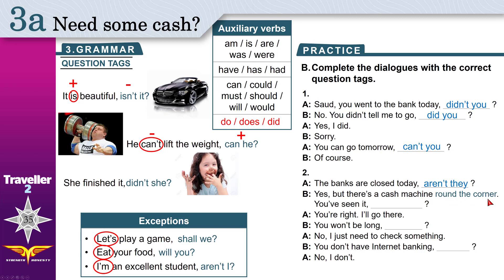'There is a cash machine round the corner' — 'round the corner' means not far away. 'You've seen it' — 'you have seen it' is present perfect; 'have' is the auxiliary verb, affirmative, so tag is negative: 'haven't you?' 'You won't be long' — 'won't' means 'will not', negative, so make tag affirmative: 'will you?' 'You don't have internet banking' — 'don't' is negative, tag is affirmative: 'do you?' Thank you for watching — please share with friends!